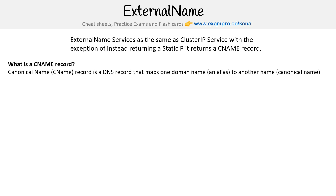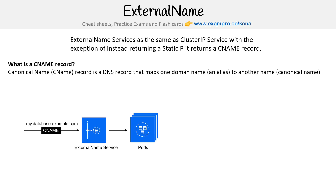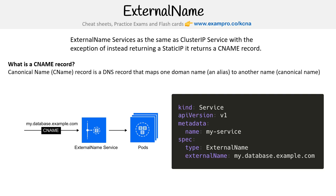So what is a CNAME record? It stands for canonical name record, and it's a DNS record that maps one domain name — an alias — to another one, a canonical name. An example would be a CNAME like mydatabase.example.com, which, if a pod was trying to call out to that domain name, the CNAME would route it to the external service.